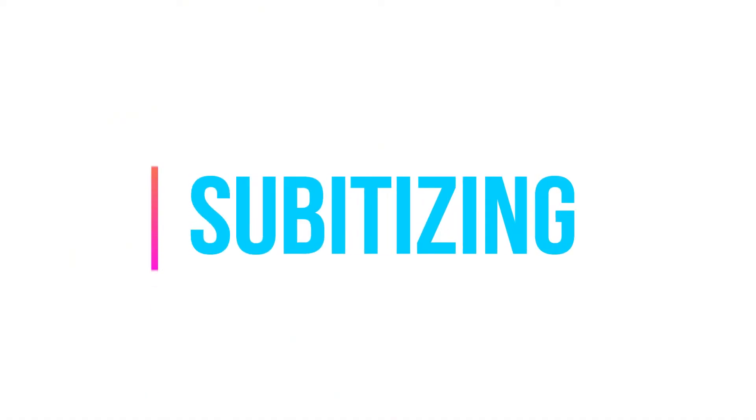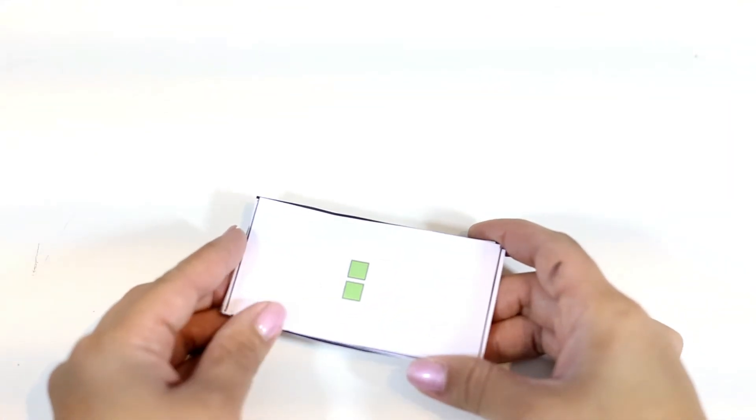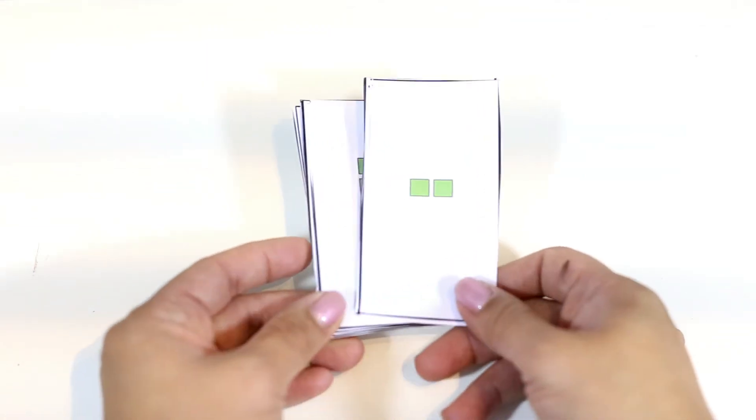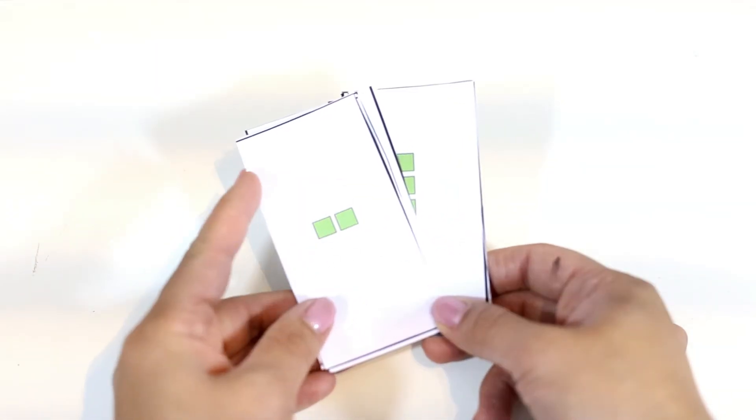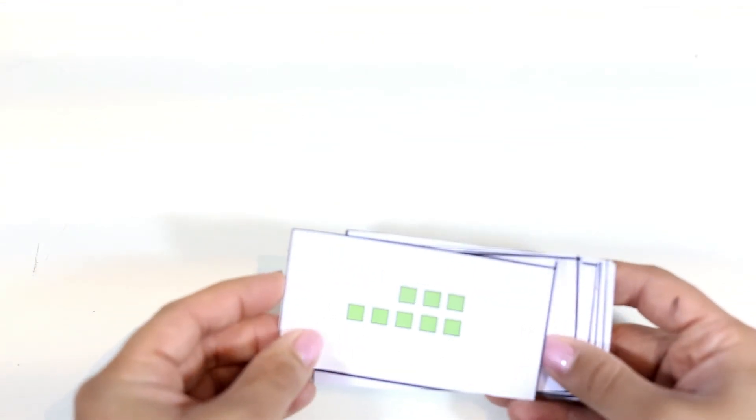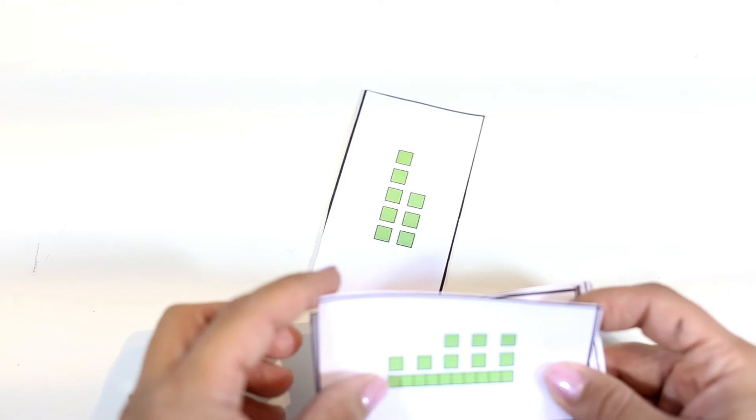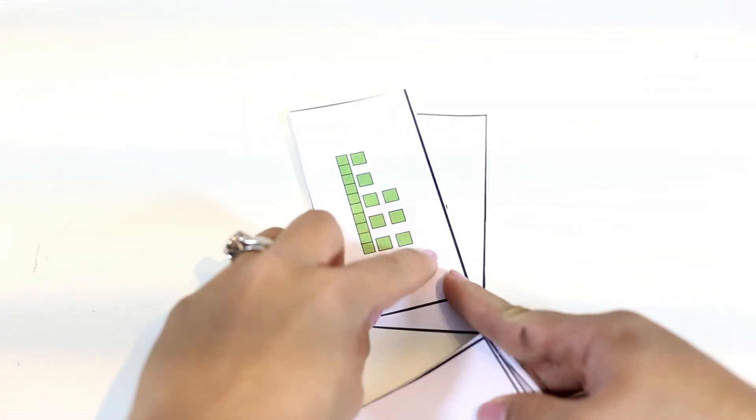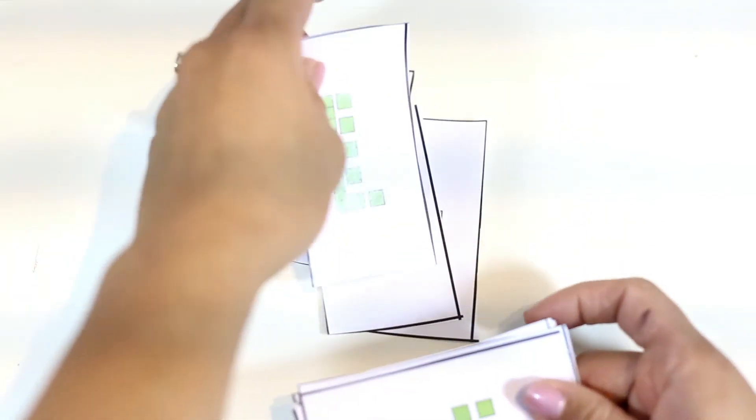This next activity for place value uses these cards. You can get these cards off of the download. This is very similar, pretty much the same activity that I showed in the tens frame where we talk about subitizing. Remember, subitizing is being able to identify a number of objects without counting them one by one. Basically, it's just like that game, Say It Fast. They are to identify the amount of place value blocks as fast as they can. So this would be 8. This is 1 ten and it looks like 8 ones. So 18, 5, 16, and so on.